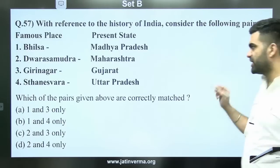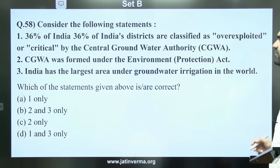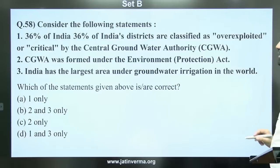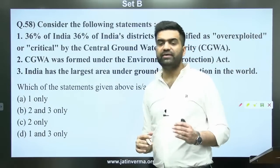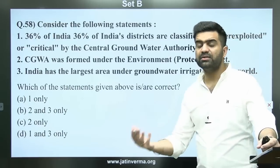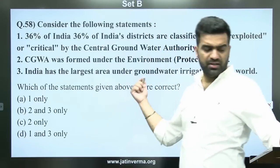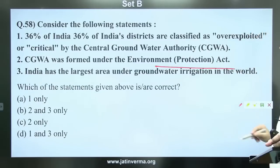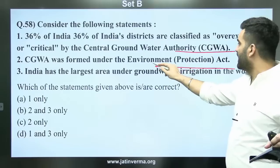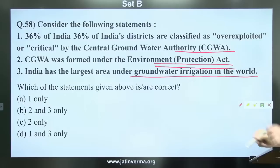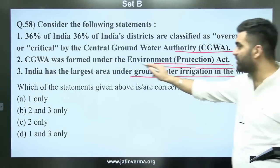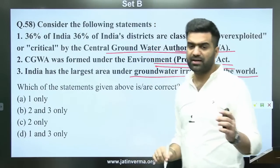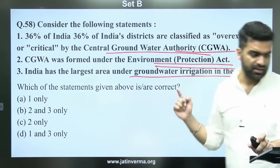Dwarsamudra is in Maharashtra and Girinagar is in Gujarat. Question 58: Consider the following statements — 36% of India's districts are classified as over-exploited; the Central Groundwater Authority (CGWA) was formed under the Environment Protection Act; India has the largest area under groundwater irrigation in the world. This question relates to NITI Aayog's water criticality report and the Jal Shakti Mission. CGWA is constituted under the Environment Protection Act.